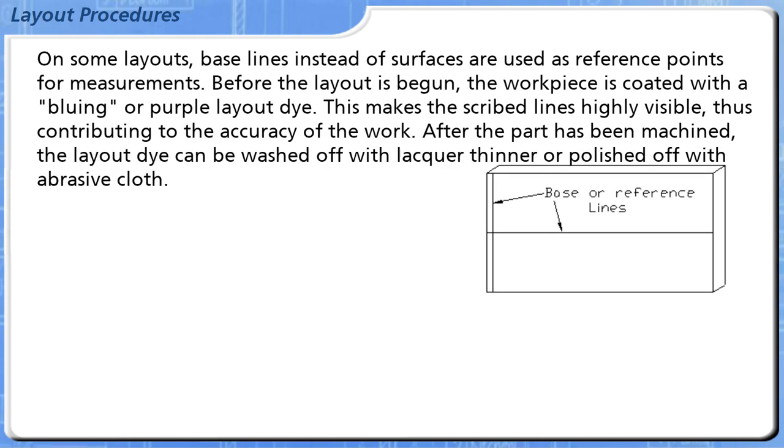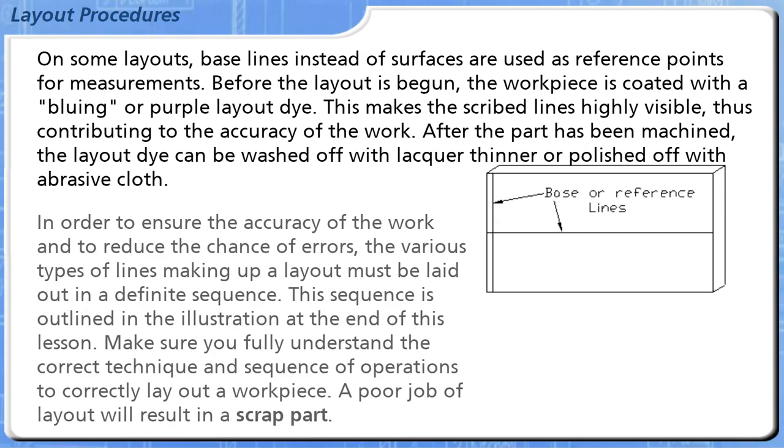On some layouts, base lines instead of surfaces are used as reference points for measurements. Before the layout is begun, the workpiece is coated with a blueing or purple layout dye. This makes the scribed lines highly visible, thus contributing to the accuracy of the work. After the part has been machined, the layout dye can be washed off with lacquer thinner or polished off with abrasive cloth.